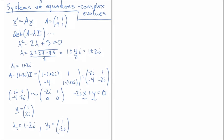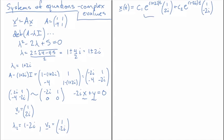Now we have the eigenvalues and eigenvectors, so we write down a general solution: x(t) = c1 times e^((1+2i)t) times [1; 2i] plus c2 times e^((1-2i)t) times [1; -2i]. This is a valid general solution, but unfortunately it is complex-valued, which is hard to work with. We are generally interested in real-valued solutions, so how do we convert?